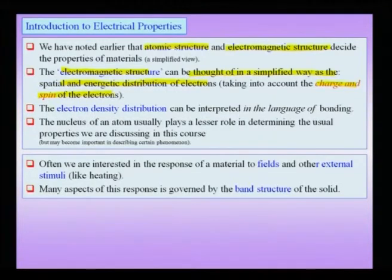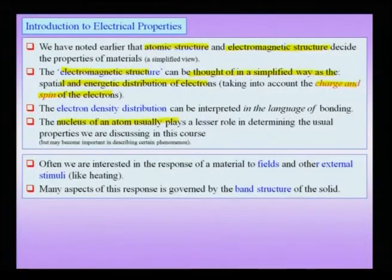When talking about electromagnetic structure, typically the nucleus of the atom is usually ignored. We are worried about the electrons, the electron density, and the spatial and energetic distribution of these electrons. Not only do we worry about the charge of the electrons in terms of density, but also about the spin of the electrons. As we shall see later, the spin is the dominant force behind the magnetic properties which we will take up.